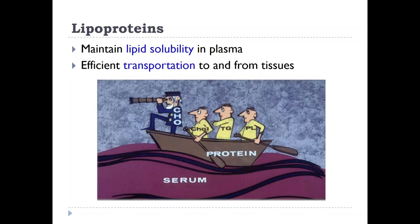Lipoproteins are the main transporter of lipids through the bloodstream. They are a very efficient way of transporting highly hydrophobic molecules — whether it's cholesterol, triglycerides, or phospholipids — through the bloodstream towards the tissues where they are actually needed and processed. They also maintain the lipid solubility in the plasma. As you can see in this cartoon, they can act like a boat that transports all those highly hydrophobic molecules to where they need to be in an aqueous solution.